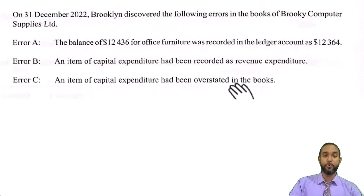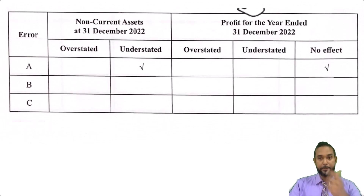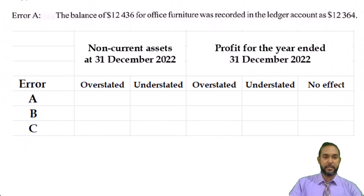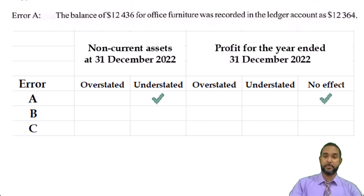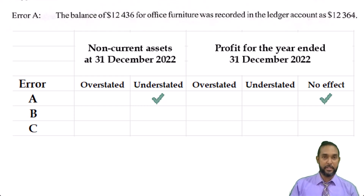Error C: an item of capital expenditure had been overstated in the books — that's the opposite of A. Overstating means it's too high. B part 1 asks you to complete the following table by putting ticks in the correct columns to indicate the effect of the errors on the non-current assets and profit for the year. The example given was Error A, where the balance of 12,436 for office furniture was recorded as 12,364 — so the non-current assets would be understated, and according to the example, this has no effect on profit.